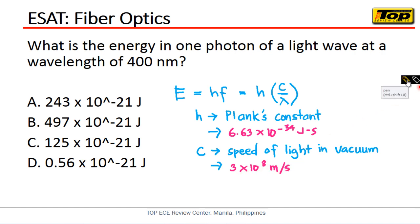So if we're going to substitute the values of Planck's constant in here and the given which is 400 nanometers, we're going to substitute it here, and the speed of light substitute there. We can get the answer.